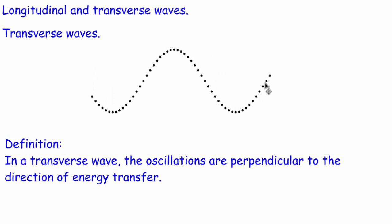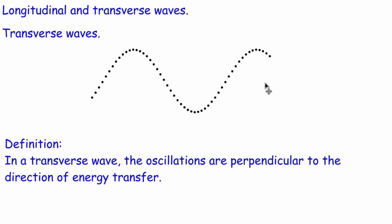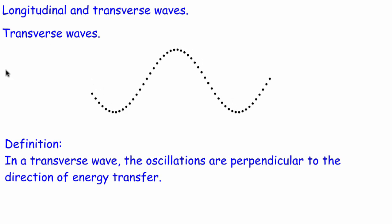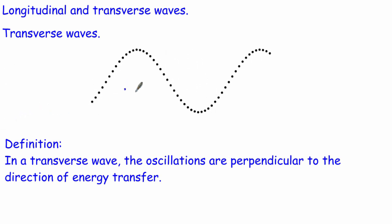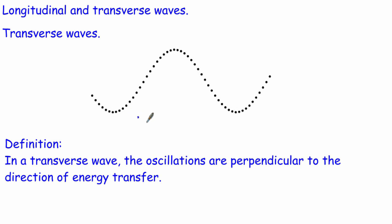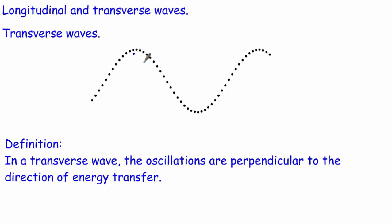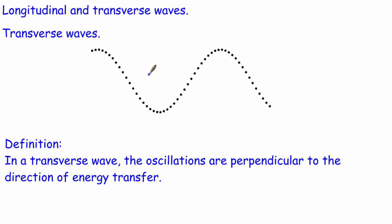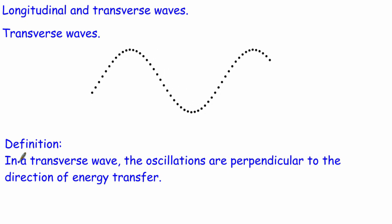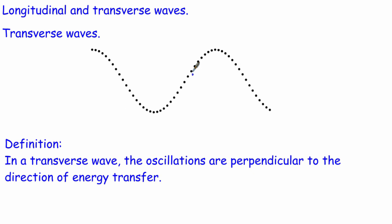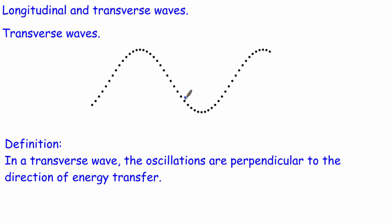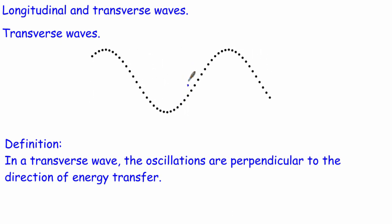Hello and welcome to this second video where we're looking at the basic nature of waves. Today we're going to look at longitudinal and transverse waves. Starting with transverse waves — the one mostly concentrated on at GCSE — this is the wave with peaks and troughs where you can define the wavelength and amplitude. The key definition you must learn describes the motion of the particles: in a transverse wave, the oscillation of the particles is perpendicular to the direction of energy transfer.